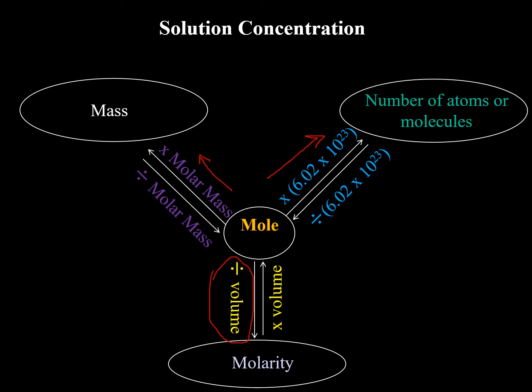So if I gave you the molarity, you would in theory be able to find the number of atoms. If I gave you the molarity, you would also be able to find the mass — you'd first multiply by the volume and then multiply by the molar mass.